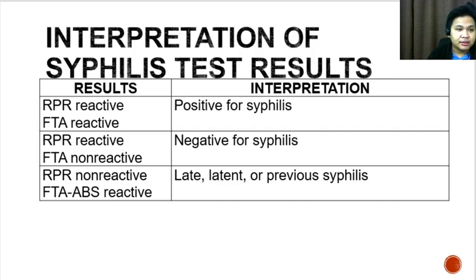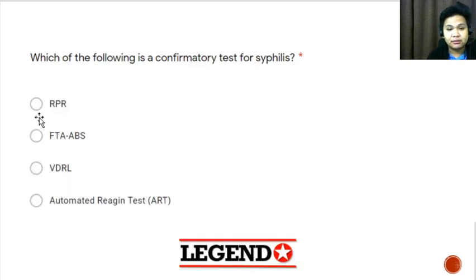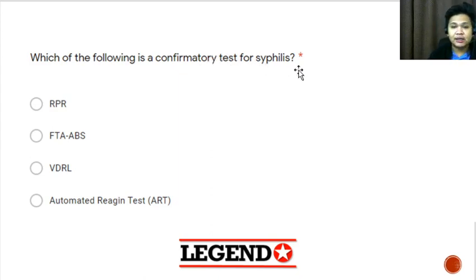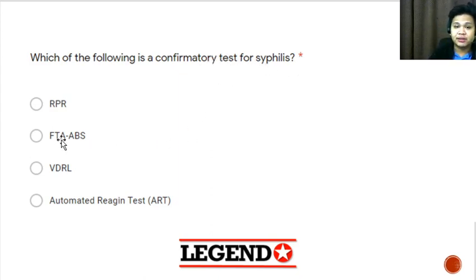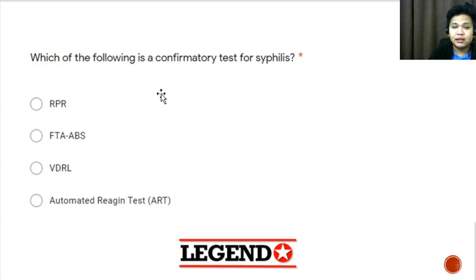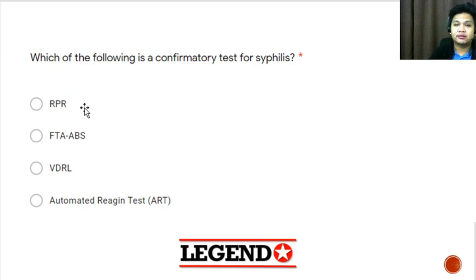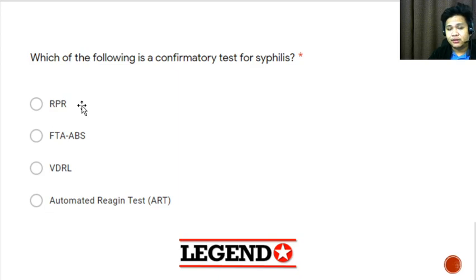Going back to the question — which of the following is a confirmatory test for syphilis? The answer is FTA-ABS, which is a treponemal test. RPR and VDRL are non-treponemal tests and are used only for screening. If you found this video useful, please like our video or subscribe to our channel. Thank you for watching.